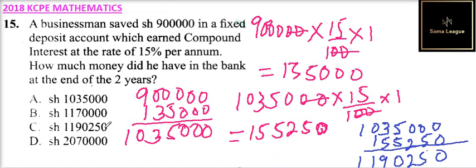So if you check our answer, the correct answer is C. That is the correct answer you choose, and you'll be able to get a mark for that.